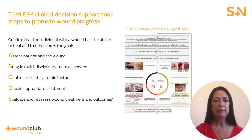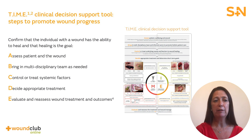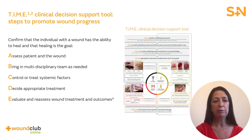They used an ABCDE approach. It is important to identify that the patient has the ability to heal and that healing is the goal. If healing is expected, it is important to assess the patient, their environment and the wound. Next, bring in specialists as needed to control or treat systemic factors such as nutrition, diabetes, vascular compromise or others. Decide appropriate treatment by using the TIME acronym to identify and prioritise barriers to healing. And lastly, during the course of care, evaluate the results of the treatment.